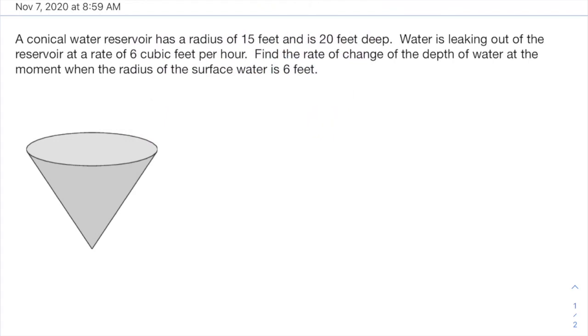So what we know right now is that the reservoir has a radius of 15 feet. So that is not changing here. Here's the conical reservoir. There's the radius. That's 15. It's 20 feet deep. So that would be referring to the altitude or the height of the cone. And that is 20. Again, not changing.